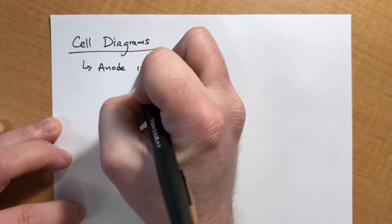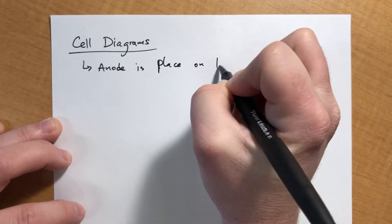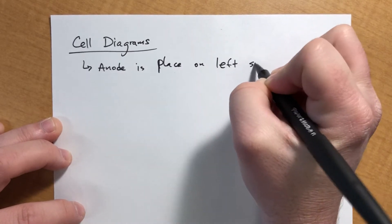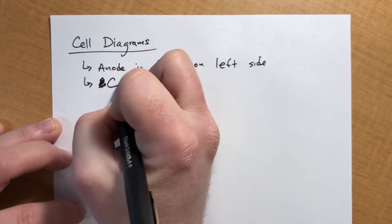The anode is always placed on the left side. Cathode is going to be on the right side.